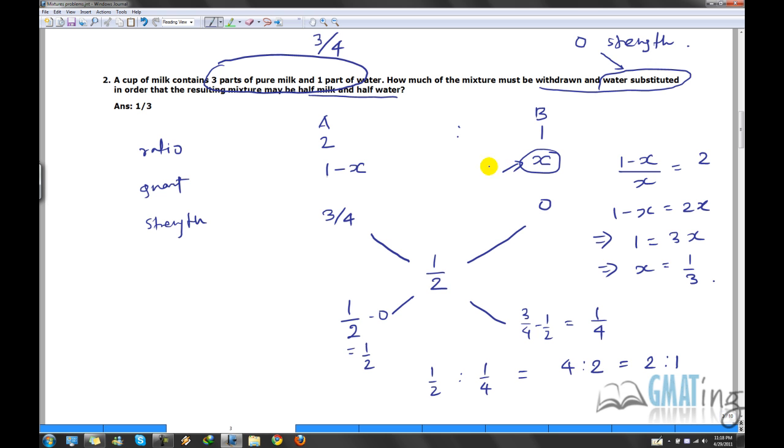So x becomes 1 by 3 and this becomes 2 by 3. So this is not really required. So what is required is 1 by 3. So what you do is you take 1 by 3 out of 1. So the answer would be 1 by 3. So we didn't really screw up. So that was fine.